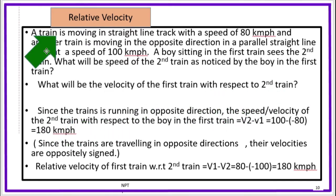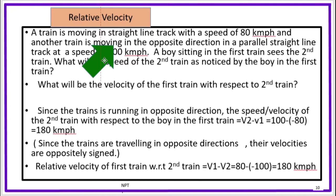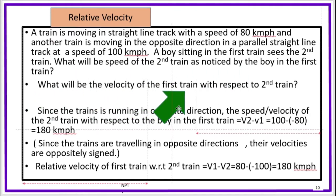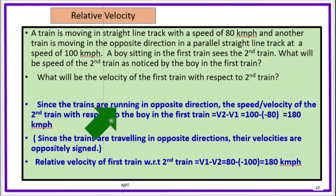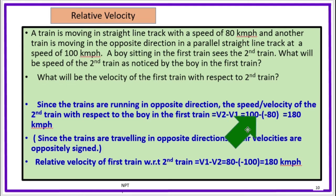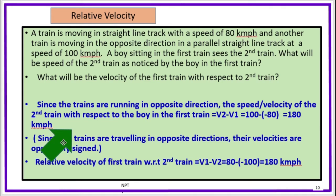One train on one straight line track moving at 80 km per hour, another moving in the opposite direction. The speed of the second train with respect to the boy in the first train is equal to V2 minus V1, that is velocity of second train minus velocity of first train, equal to 100 minus minus 80, equal to 180 km per hour. That means the train moving in the opposite direction seems to be at a very high velocity.